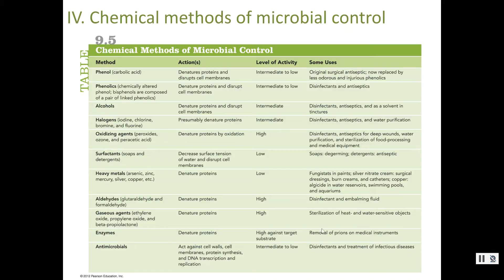Let's talk about some chemicals — how we can control microbial growth in our environment with chemicals. We like to spray stuff and use chemicals to control microbial growth. I'm going to work through levels of activity as we go through the chemicals, and I definitely want you to look at how you use these and what the best choices are, because that's what test questions are going to be about, and that's what real life is going to be about.